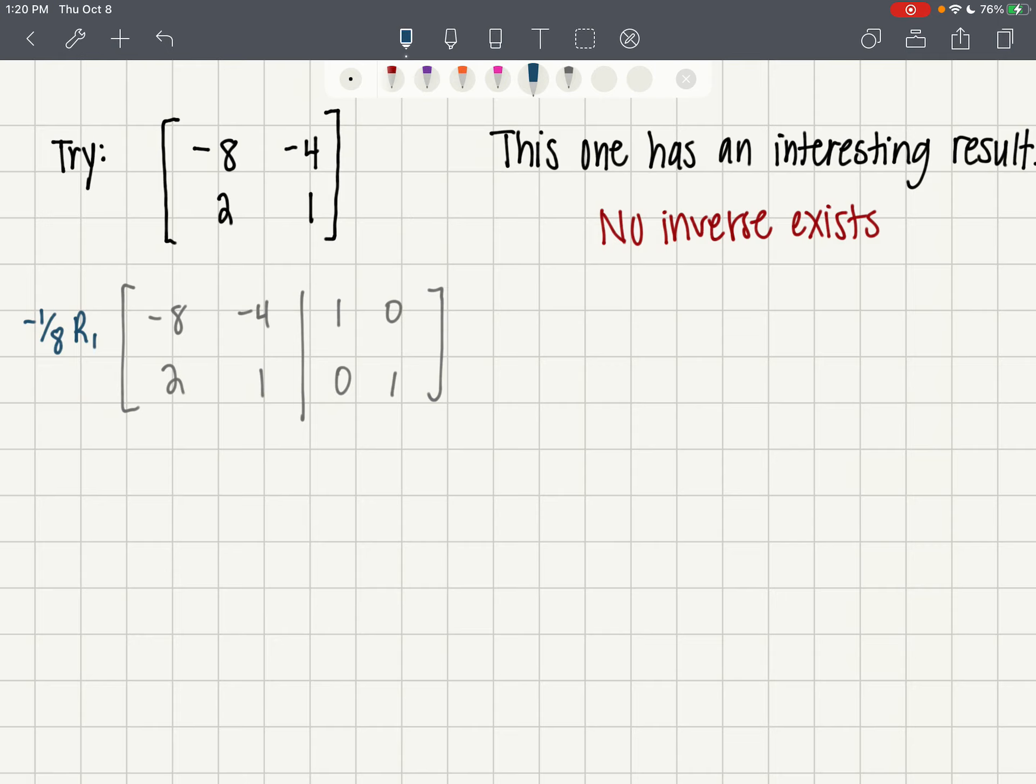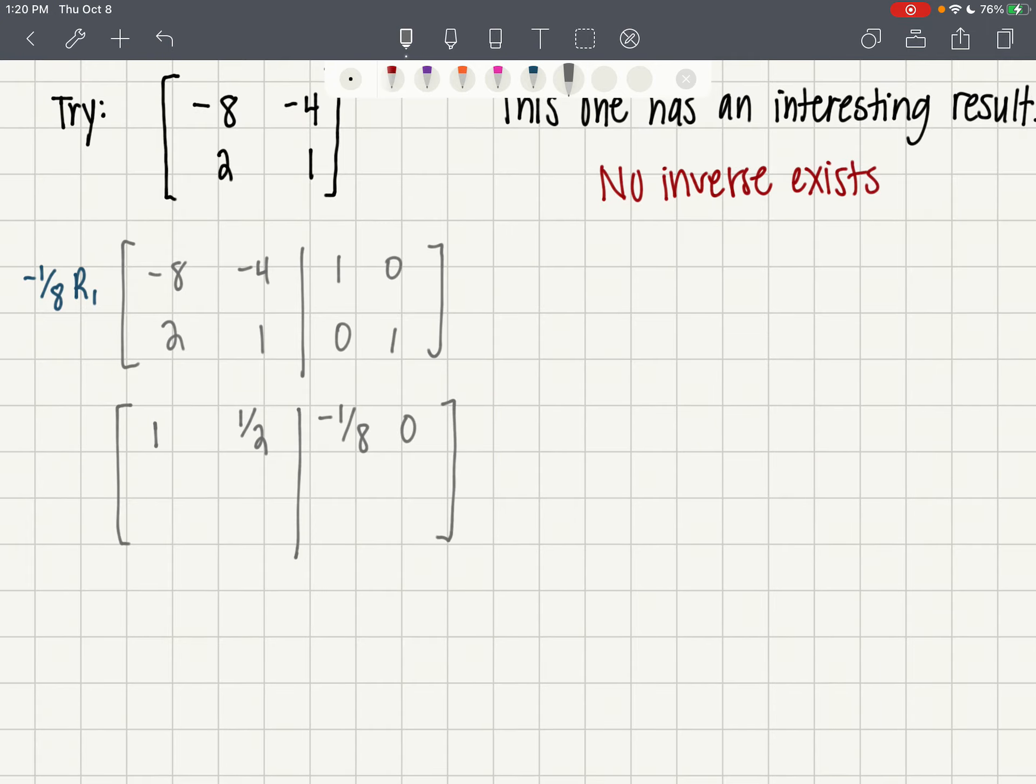Okay, so the first row becomes a one and then a one-half, and then negative one-eighth and zero. And the second row, I'm going to have room to do this because we're going to get stopped short here, so just write the second row the way it is.